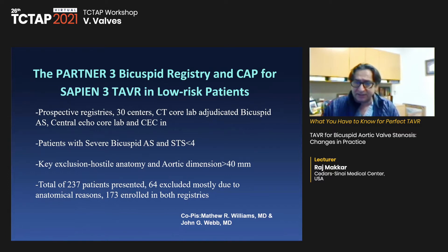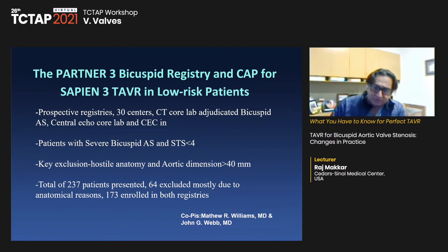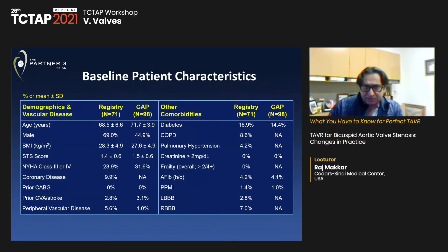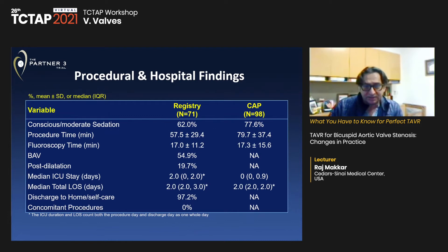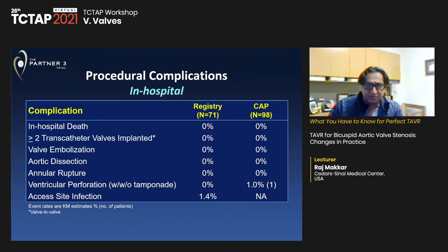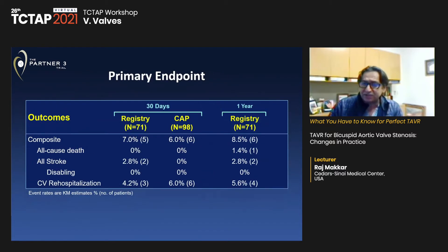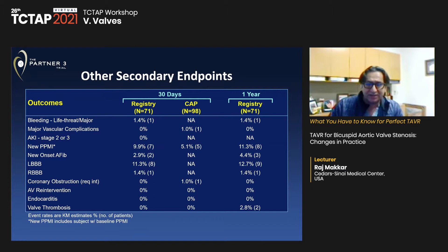Data from the PARTNER registries across 30 centers showed some key exclusion criteria including hostile anatomy and aortic dimensions more than 40 millimeters. Notably, more than one-third of patients were excluded. Average age was 68–71, two-thirds of procedures were done with conscious sedation. In-hospital death was 0%, valve embolization 0%, and aortic rupture 0% — remarkable results reflecting careful selection. One-year death rates were 1.4% and 0% across the two registries, though these results cannot be generalized to all bicuspid patients.